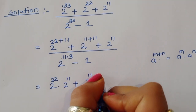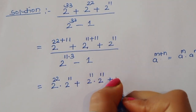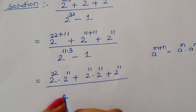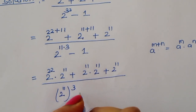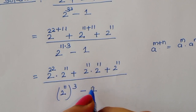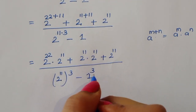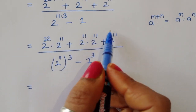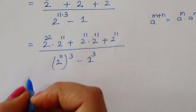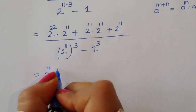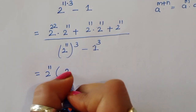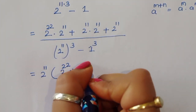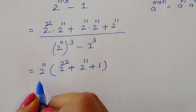So the numerator becomes 2 power 22 times 2 power 11 plus 2 power 11 times 2 power 11 plus 2 power 11. The denominator is 2 power (11 times 3) minus 1. We can take 2 power 11 common from the numerator, leaving 2 power 22 plus 2 power 11 plus 1.